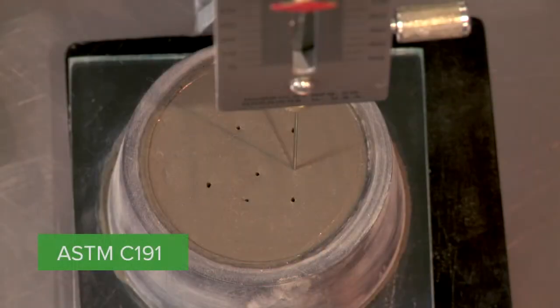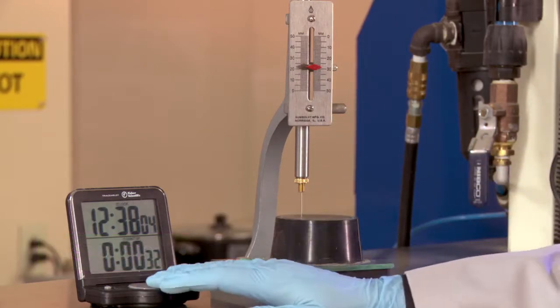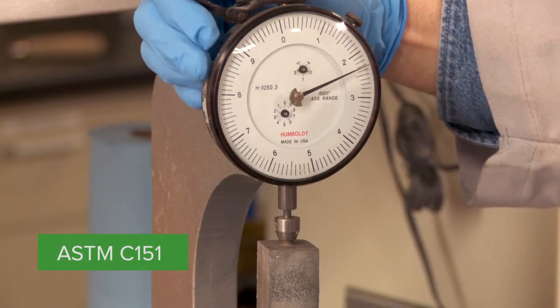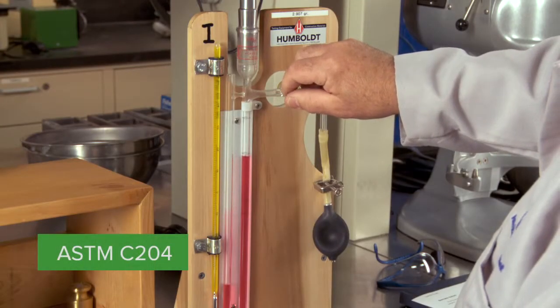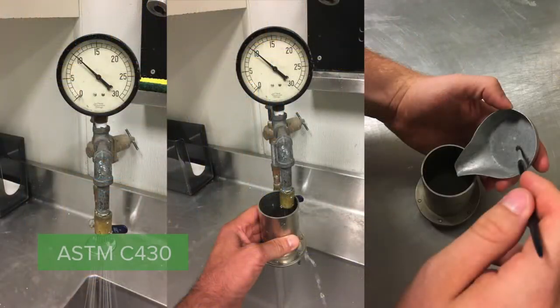ASTM C191 time of setting by Vicat needle, ASTM C151 autoclave expansion of cement, ASTM C204 fineness of cement by air permeability apparatus, ASTM C430 fineness of cement by the number 325 sieve.